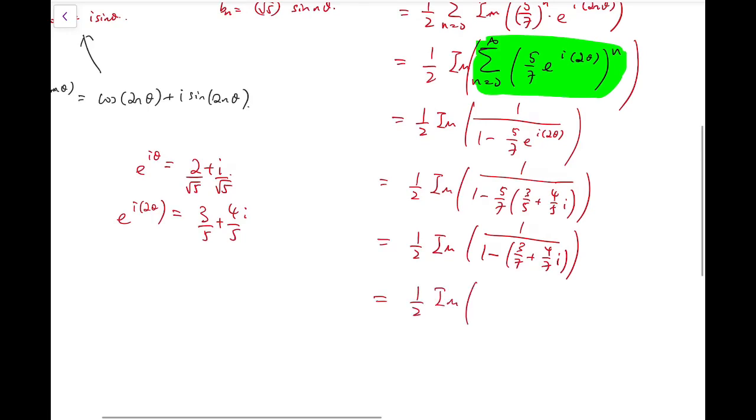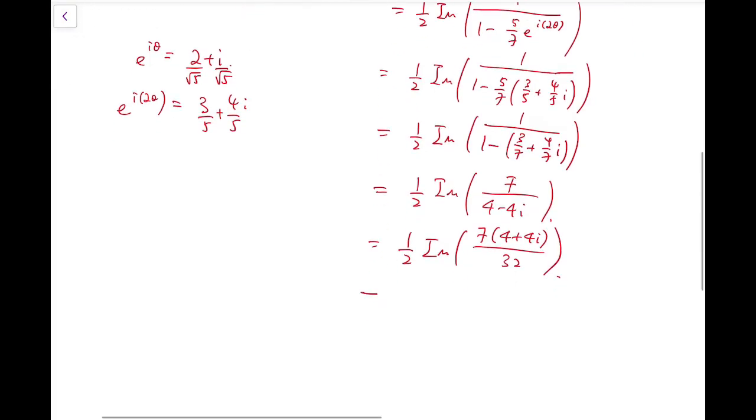This becomes 1 over (4/7 - 4i/7), with numerator 7. After rationalizing, we take the imaginary part: 1/2 times 7 times 4/32, which is 7/16. That's our final answer.